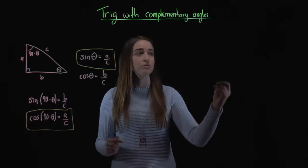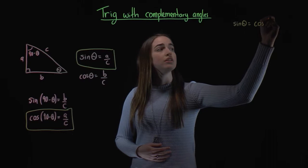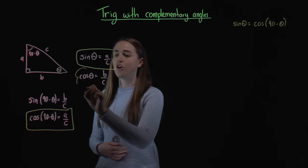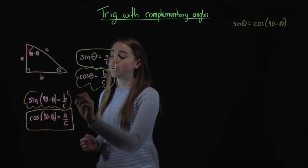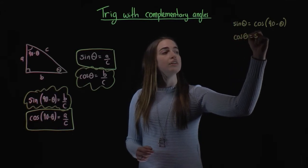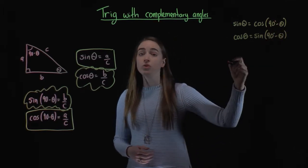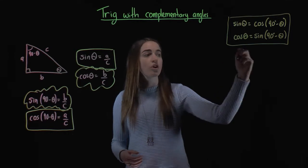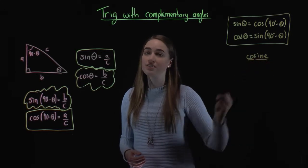So that means those two things are equal. So sine of theta is going to be equal to cos of 90 minus theta. It also works the other way — if we have cos of theta equals b over c, we also know that sine of 90 minus theta is b over c as well. So cos of theta equals sine of 90 minus theta. These are what are called complementary angle relationships, and it's actually where the cos ratio gets its name — its full name is cosine, because it's the complement of sine.